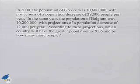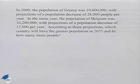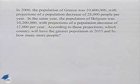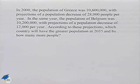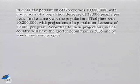Let's look at a problem where we're going to have to do a comparison between two countries. In 2000, the population of Greece was 10,600,000, with projections of a population decrease of 28,000 people per year. In the same year, the population of Belgium was 10,200,000, with projections of a population decrease of 12,000 per year. According to these projections, which country will have the greater population in 2035 and by how many more people?